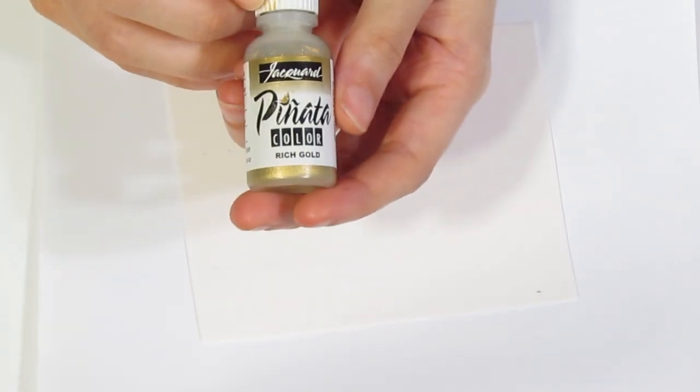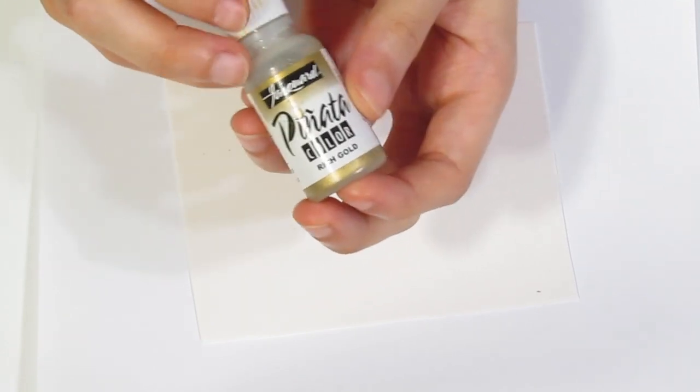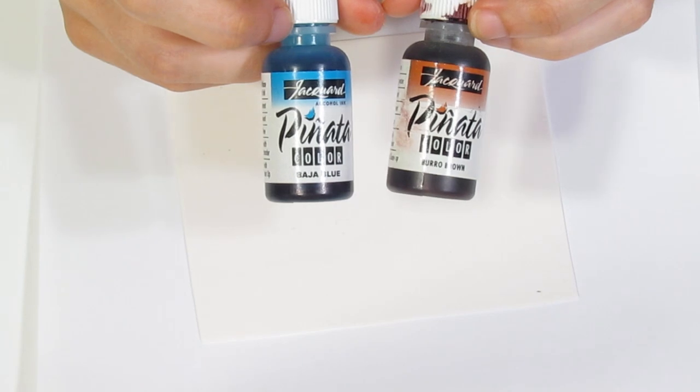Okay, I'm just going to show you the alcohol inks I'm using. I'm using a metallic gold. It can be any brand that you're comfortable using. This is the one that I'm using. Then I'm using pinata brown and blue. It doesn't have to be any specific brand. You can use just any brown and blue you want.